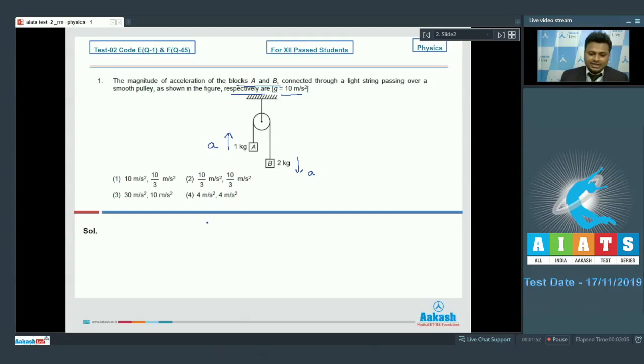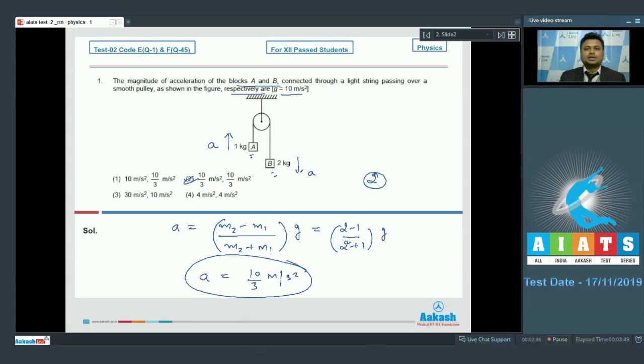Now this magnitude of acceleration A can be given as A equals M2 minus M1 divided by M2 plus M1 multiplied by G, where M2 is heavier mass. Putting the values from the question into given expression we have 2 minus 1 upon 2 plus 1 multiplied by G, and after solving we will get the value of acceleration A as 10 by 3 meter per second square. Now the magnitude of both A and B will be same and that is equal to 10 by 3 meter per second square. We will go with option number 2 which is absolutely correct.